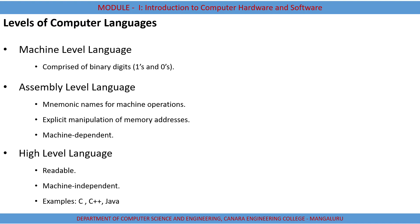The second type is assembly level language, which uses mnemonic names for machine operations — fixed commands or codes used to represent a specific task. Assembly language is machine dependent, meaning one code may work for one machine but the same code may not work for all machines. The third type is high level language, which is machine independent, readable, and uses English-like statements. Examples include C, C++, and Java.